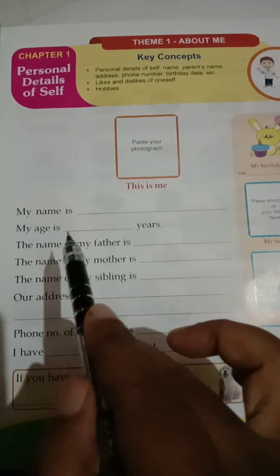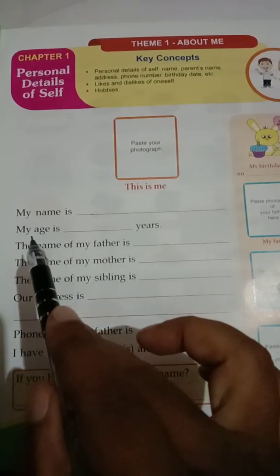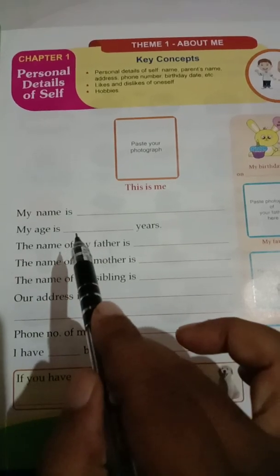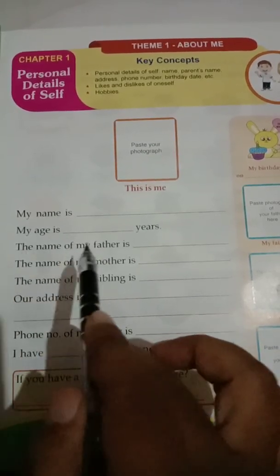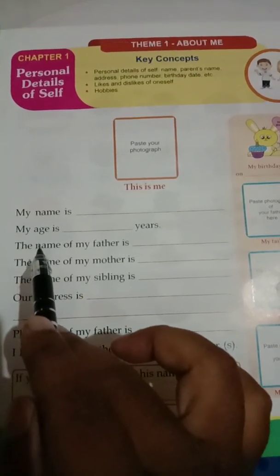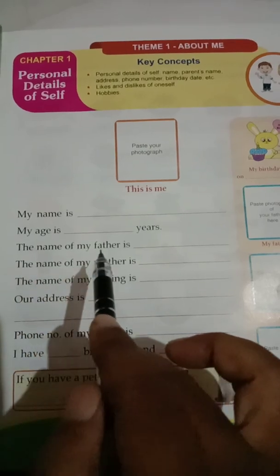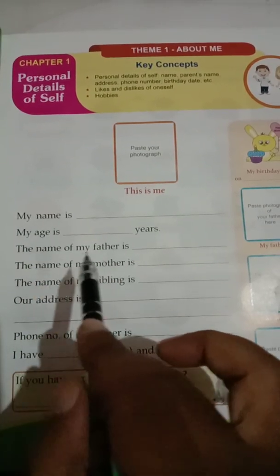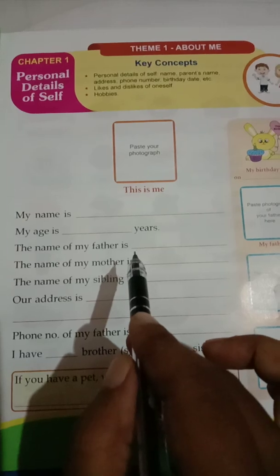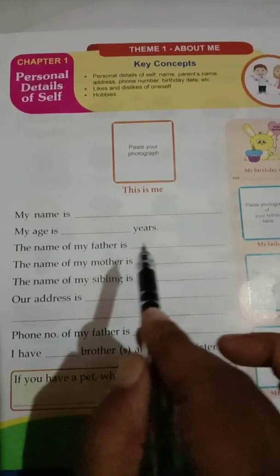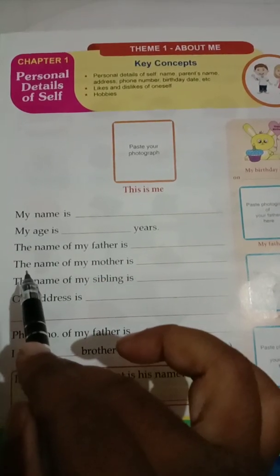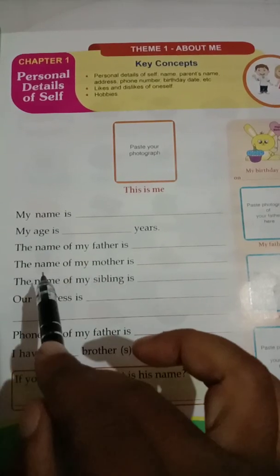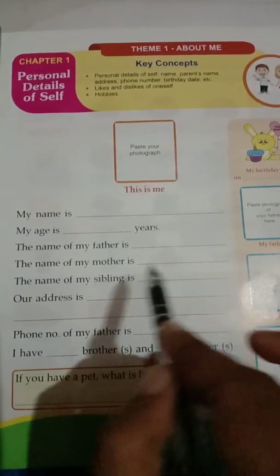My age is... — you have to write your age here. How old are you? You have to write it here. The name of my father is... — you have to write your father's name here. The name of my mother is... — you have to write your mother's name here.